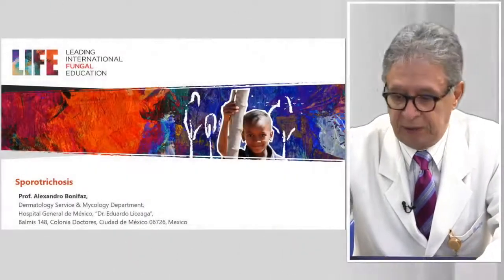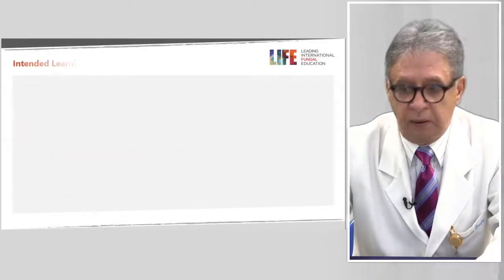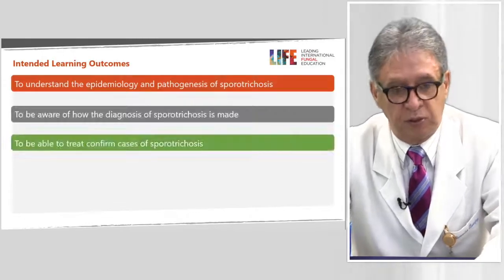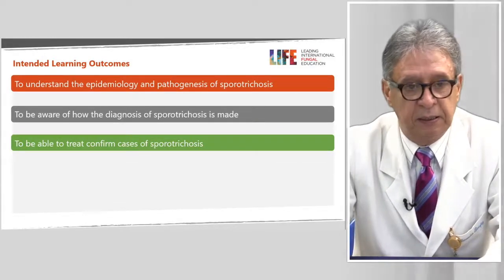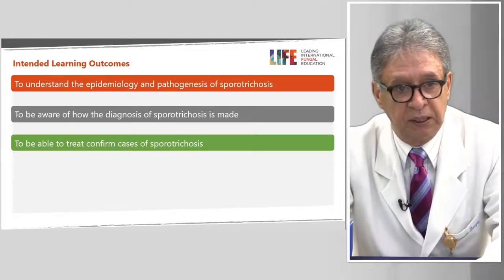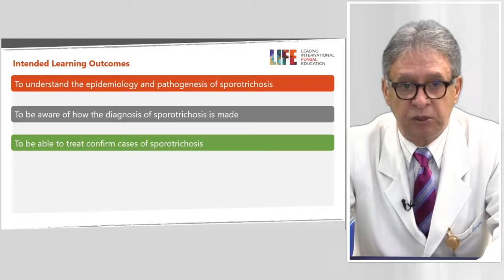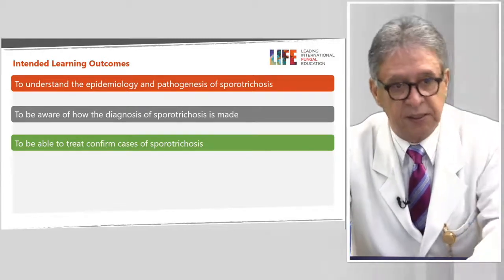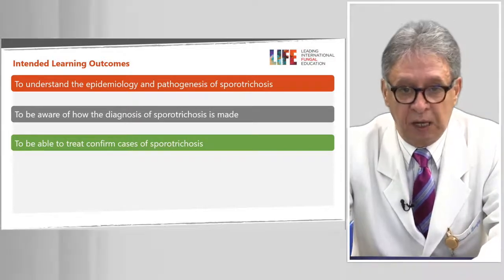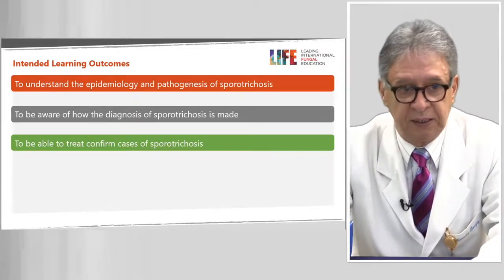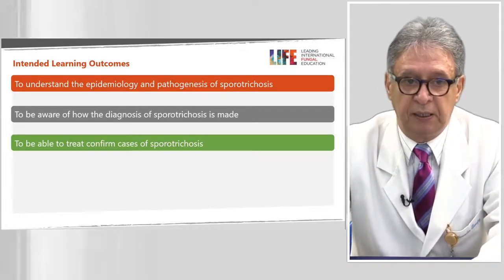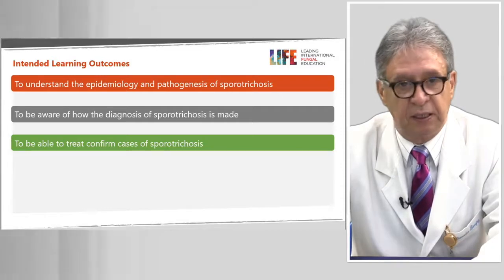Hi, good morning. I'm Alexandro Bonifaz. I'm working in the dermatology service and mycology department of the General Hospital of Mexico, El Hospital General de Mexico. I'm going to talk about sporotrichosis, this important mycosis, and I have three objectives of my lecture. The first one is to understand the epidemiology and pathogenesis of this disease. The second is to be aware of how the diagnosis of sporotrichosis is made. And, of course, to be able to treat the confirmed cases of this mycosis.